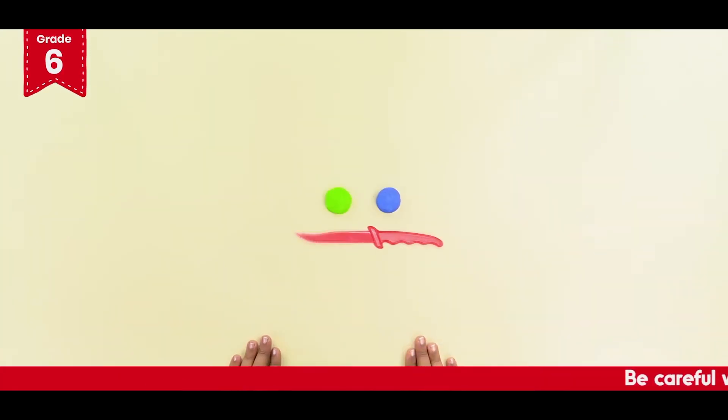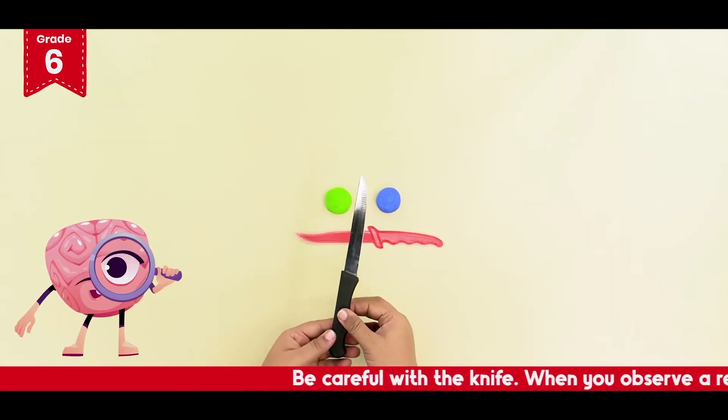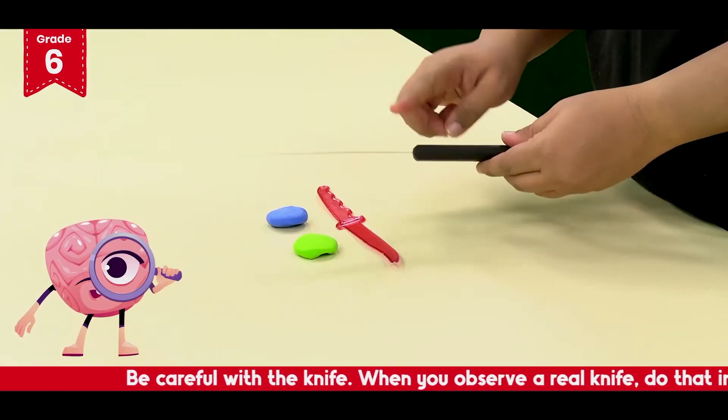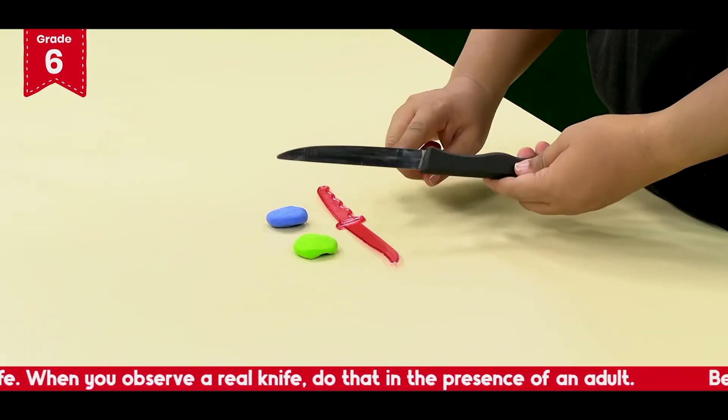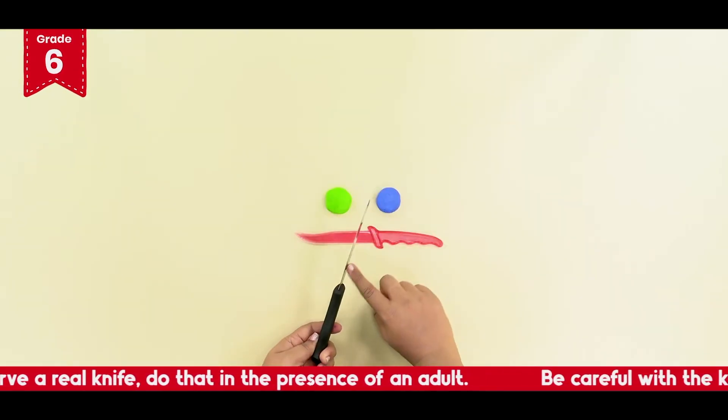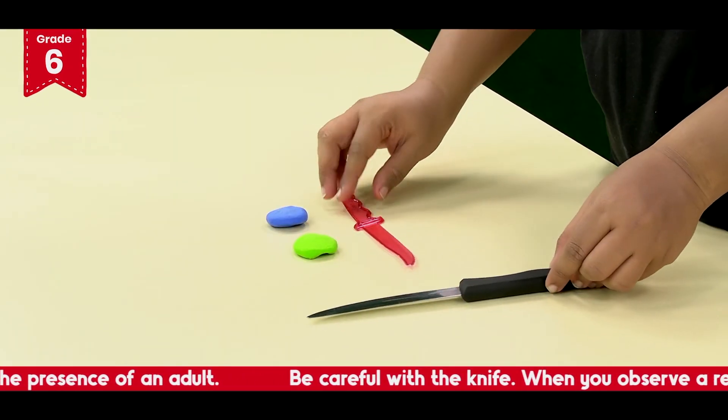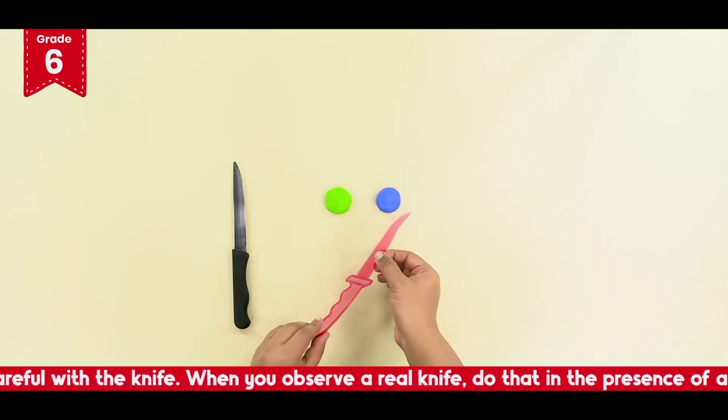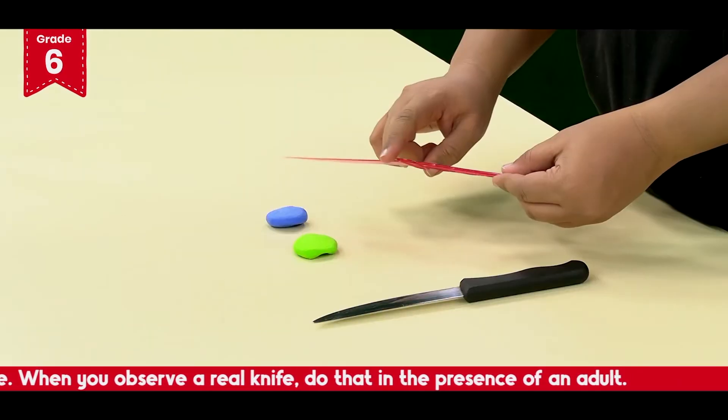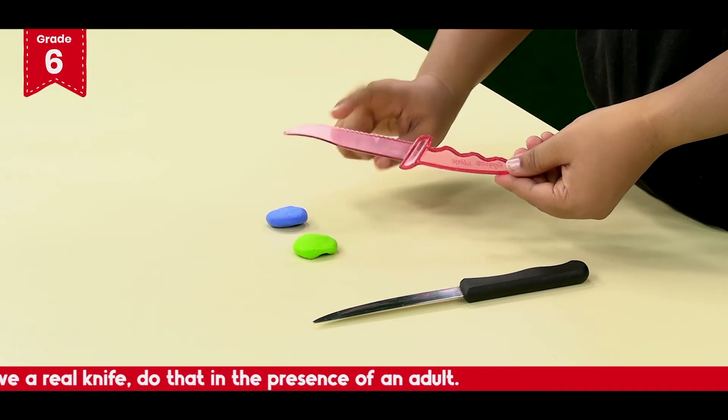Now let's observe this knife. Can you see this knife has two edges? This one is a blunt edge and this one is a very sharp edge. Similarly, the plastic knife that you have received in the IntelliSmart box also has two edges, the blunt edge and the sharp edge.